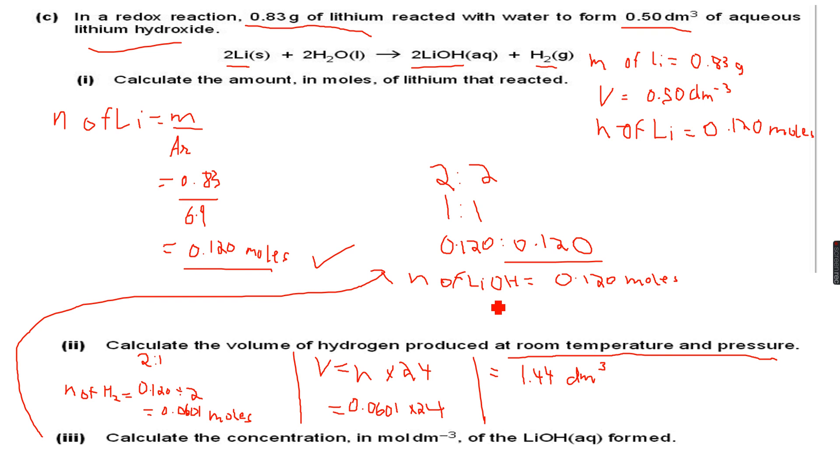We have calculated the moles of lithium hydroxide. Now concentration, as we know, is equal to n over V. So n is equal to 0.120. The volume of solution is 0.5 dm³ as given in the question, so the concentration becomes...